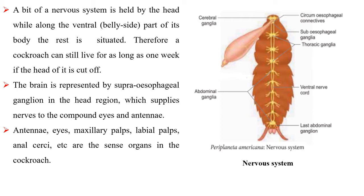A bit of the nervous system is held by the head while along the ventral part of its body the rest is situated. Therefore, a cockroach can still live for as long as one week if its head is cut off. The brain is represented by the supraoesophageal ganglion in the head region, which supplies nerves to the compound eyes and antennae.